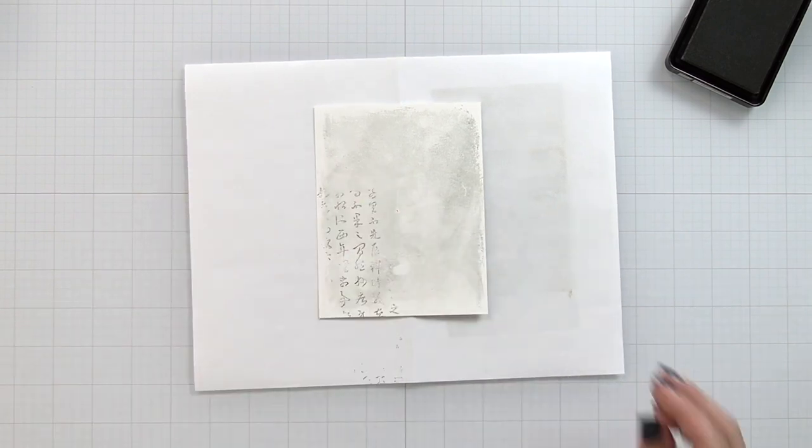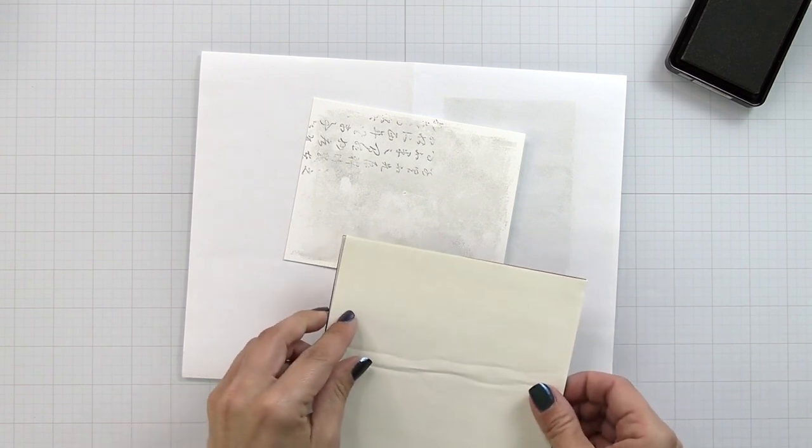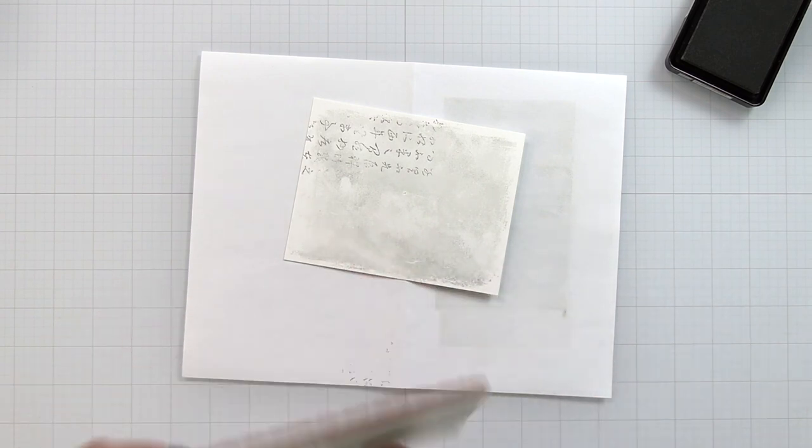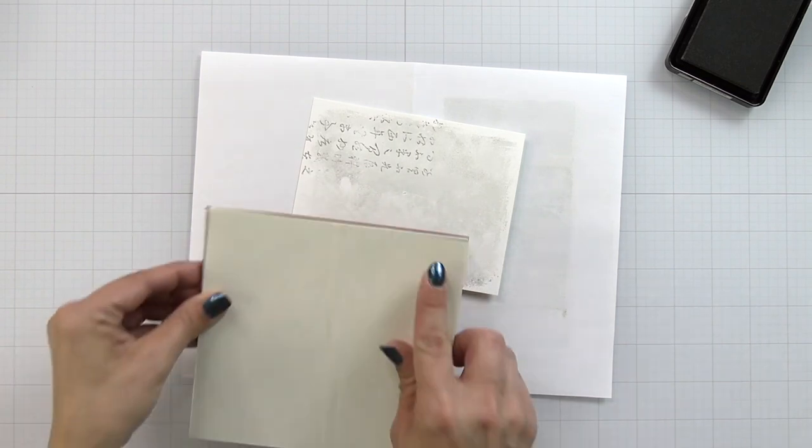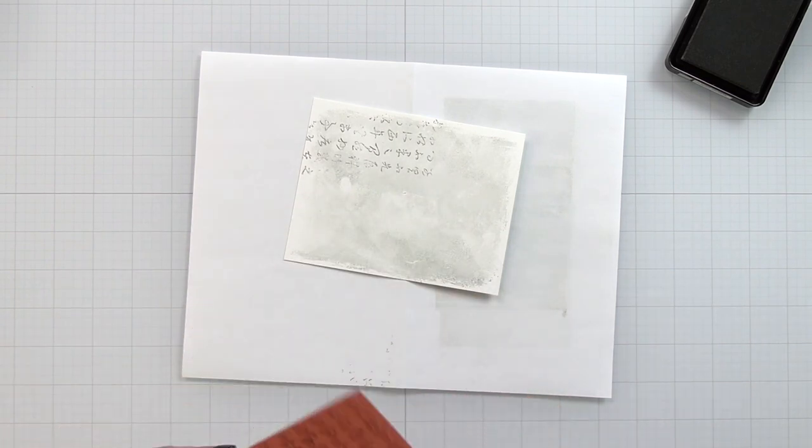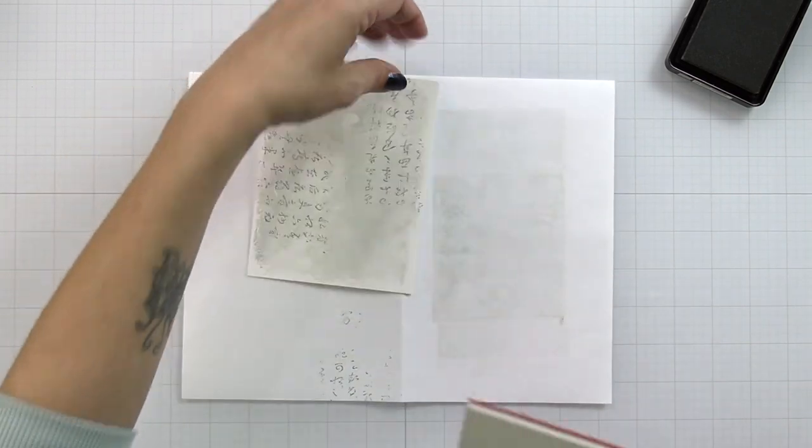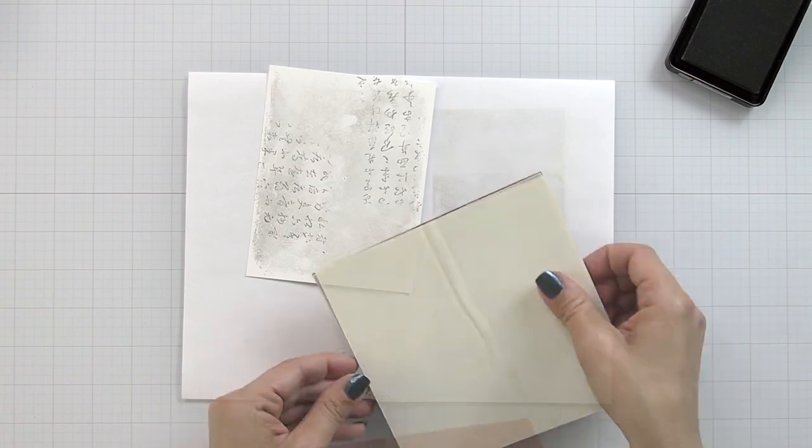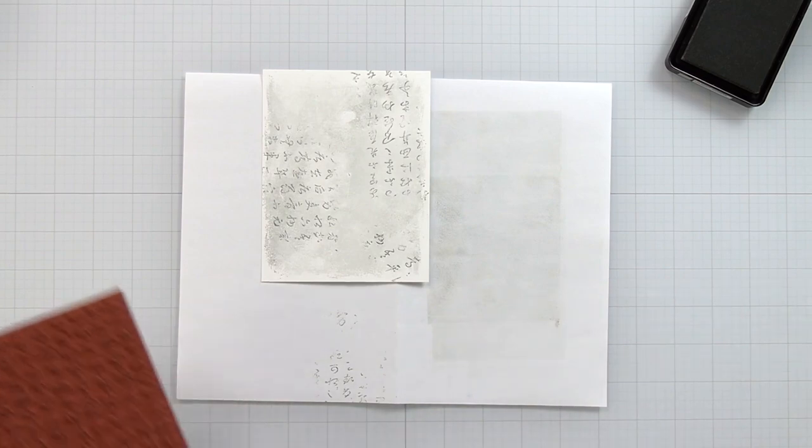I'm not even going to use a stamping tool for this because I want it to be kind of messy. I don't want it to look perfect so I'm just going to stamp this in different directions onto my cardstock. I want these words or letters to go in different directions. That's what makes it really interesting and adds that subtle look to the background.